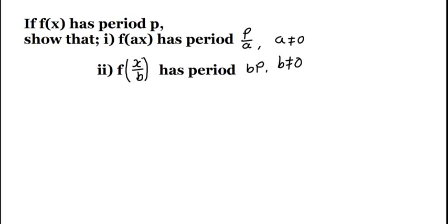In this example, we are told that if f(x) has period p, we have to show that f(ax) has period p/a, where a is not equal to 0.